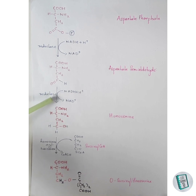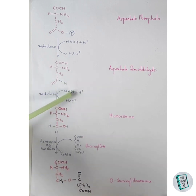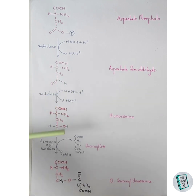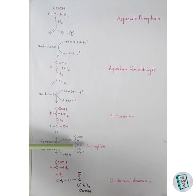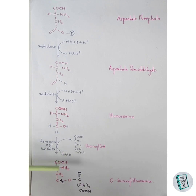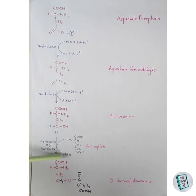In the presence of reductase enzyme, aspartate semi-aldehyde is reduced to form homoserine. NADH₂ donates one hydrogen to the carbon and another to the oxygen atom to form homoserine. This homoserine then combines with succinyl-CoA in the presence of homoserine acyltransferase, resulting in removal of CoA-SH and formation of O-succinyl homoserine. The hydroxyl group attached to the oxygen is removed for the release of CoA-SH, and the oxygen then combines with the adjacent carbon to form O-succinyl homoserine.